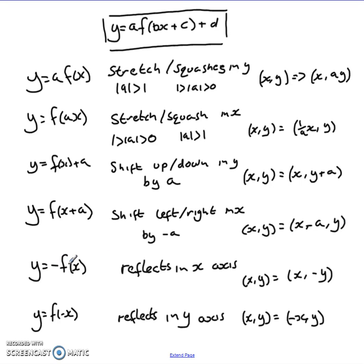Y equals negative f of x reflects everything in the x axis, so x, y goes to x comma negative y. And y equals f of minus x reflects everything in the y axis, so x, y goes to negative x comma y. These were the six key transformations.